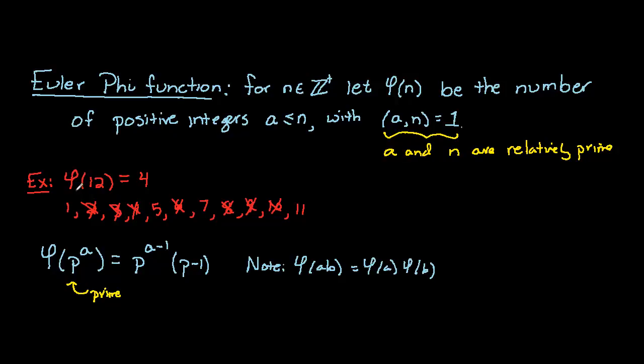So let's revisit phi of 12 and see if there's a better way to compute this, rather than listing out all of the integers less than 12. We need to look at this in terms of its prime factor decomposition. If we look at 12, 12 is the same as 2 squared times 3.